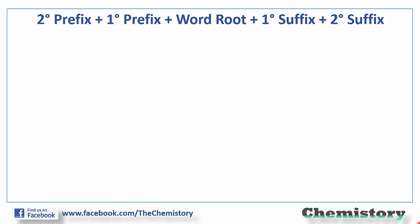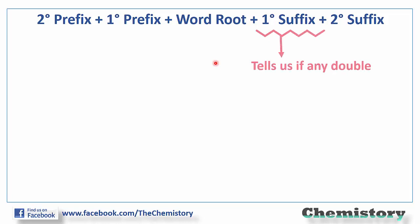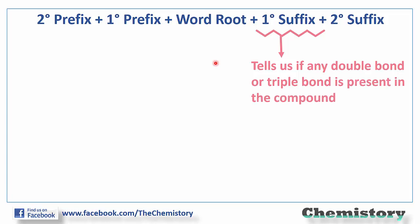In this video, we shall learn about the primary suffix of an IUPAC name. Suffix means the words added after a word. Primary suffix is attached just after the word root and it tells us the degree of unsaturation of any organic compound.